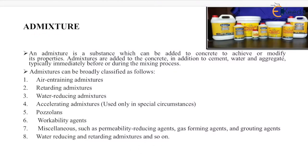The next constituent is admixture. An admixture is a substance added to concrete to achieve or modify its properties. Admixtures are added in addition to cement, water, and aggregate, typically immediately before or during the mixing process. Admixtures can be broadly classified as: air-entraining admixtures, retarding admixtures, water-reducing admixtures, accelerating admixtures, pozzolanas, workability agents, miscellaneous agents (such as permeability-reducing agents, gas-forming agents, and grouting agents), and water-reducing and retarding admixtures.